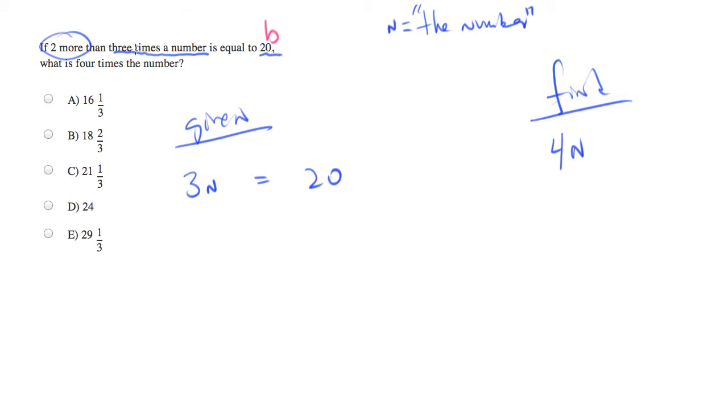Which means that 20 is the big side, and 3 times the number is the small side. So if we're going to add 2 to one of the sides, we should do it to the small side, so that both sides of this equation can be equal.